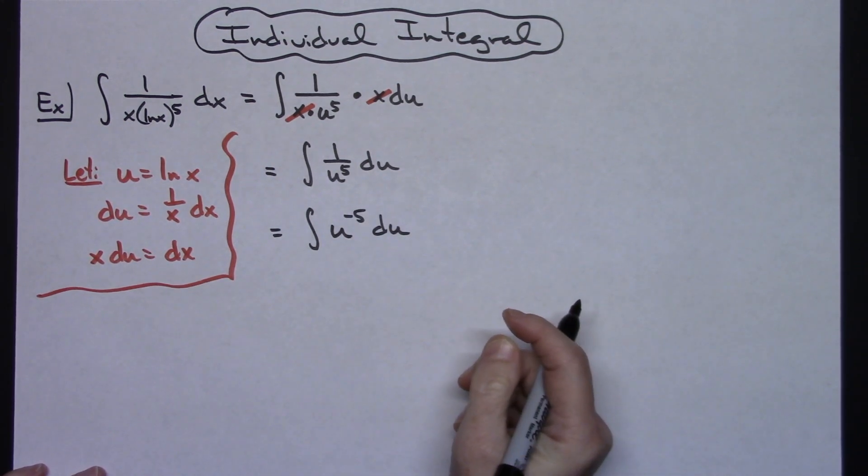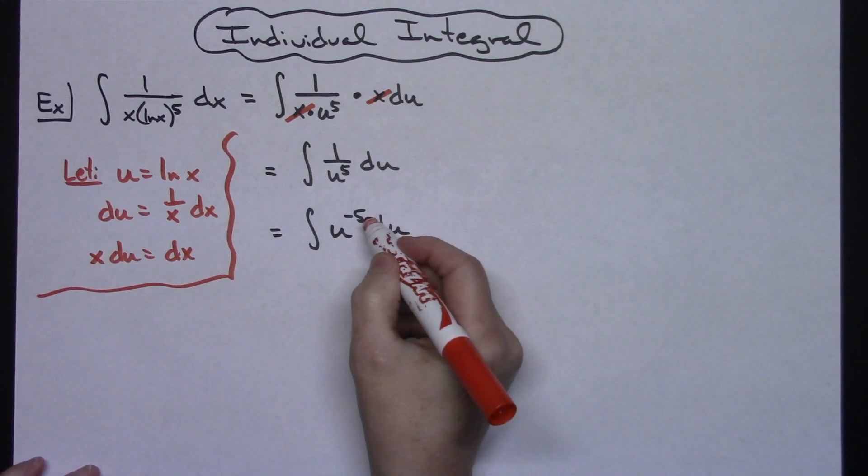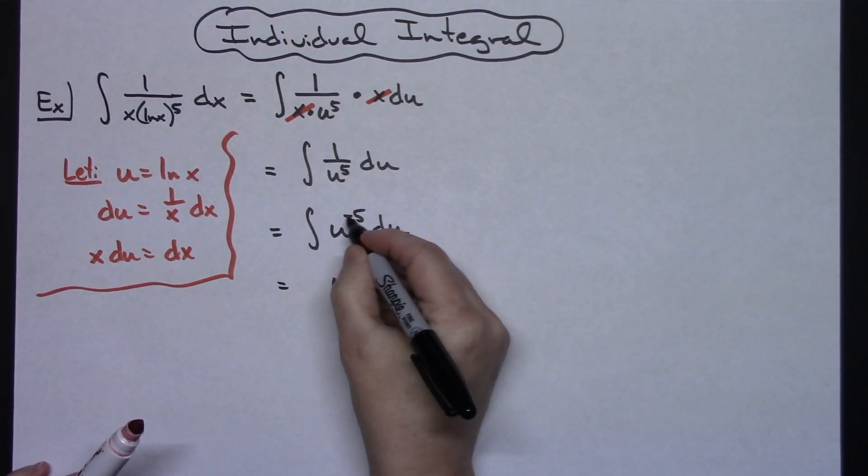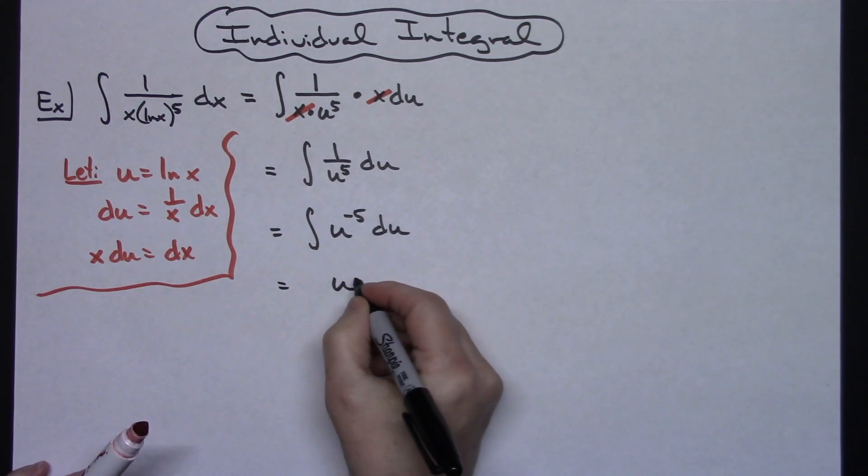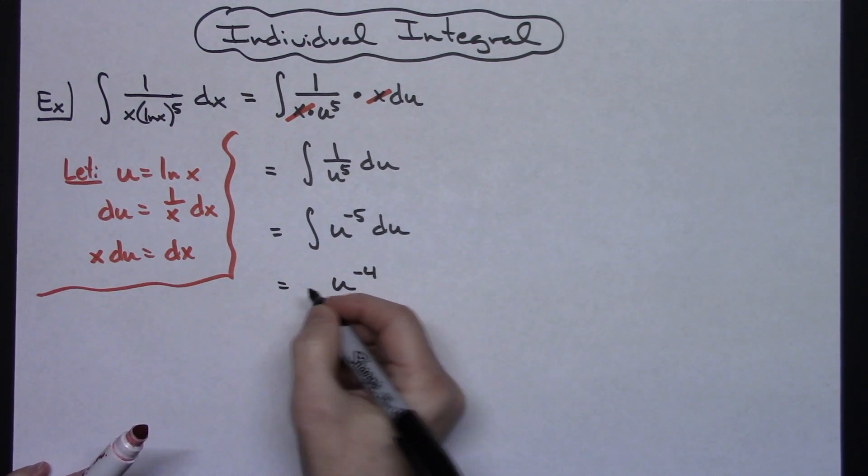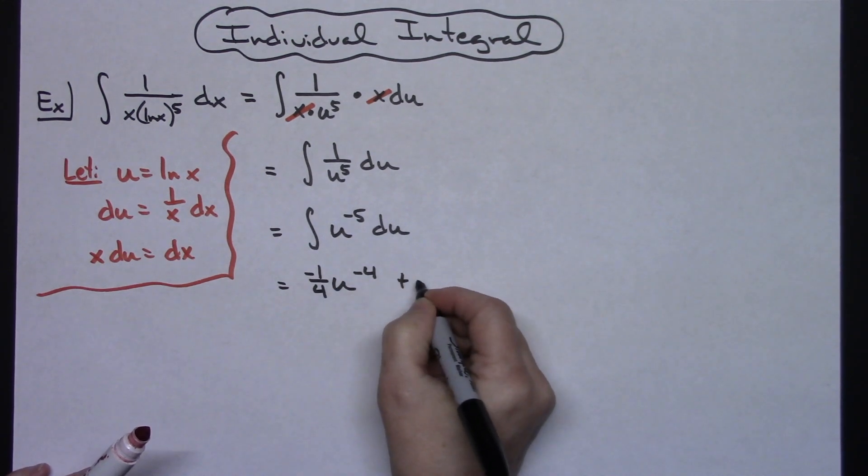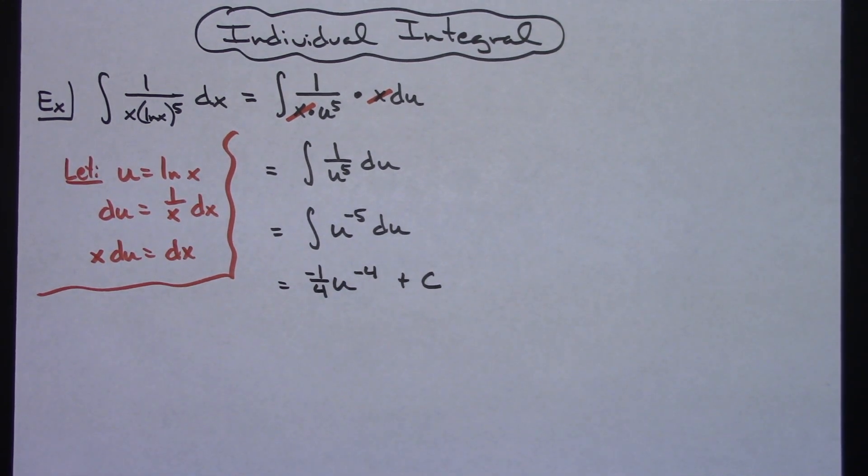Alright from here now I can integrate this by adding 1 to that exponent. So we'll have u. If I add 1 to the exponent negative 5 plus 1 is going to give me negative 4 and then putting it in front I'll have negative 1 fourth and we don't want to forget that plus c because we've now integrated.